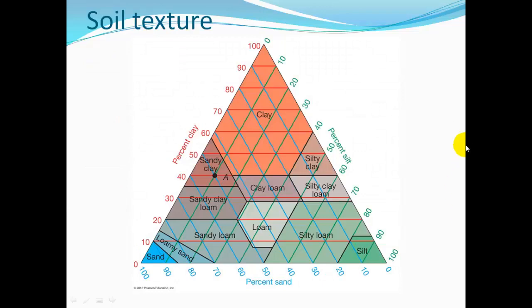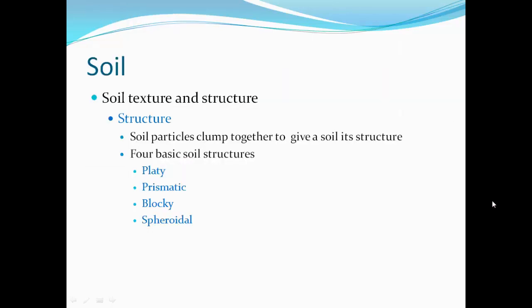To classify soil texture, we look at the percentage of clay versus silt versus sand. 100% sandy soil is just sand. Soil that's all clay is clay, and all silt is silt. Loam is a really nice mix — between 10 and 30% clay and around 30 to 50% silt. Clay loam is also a very nice mixed soil. Soil particles clump together to give the soil its structure. The four basic soil structures are platy, prismatic, blocky, and spheroidal.